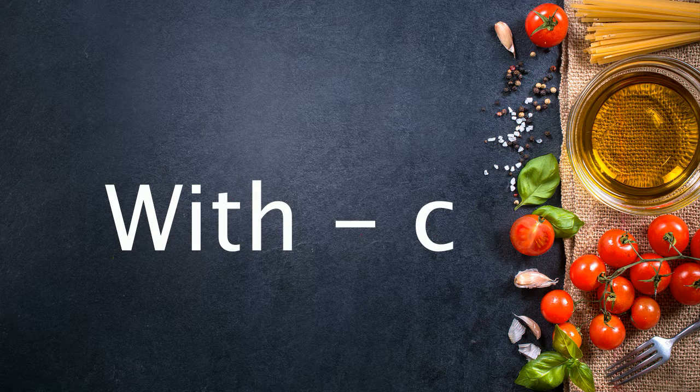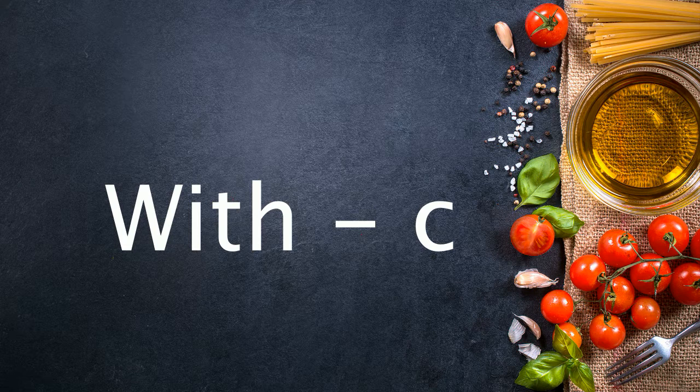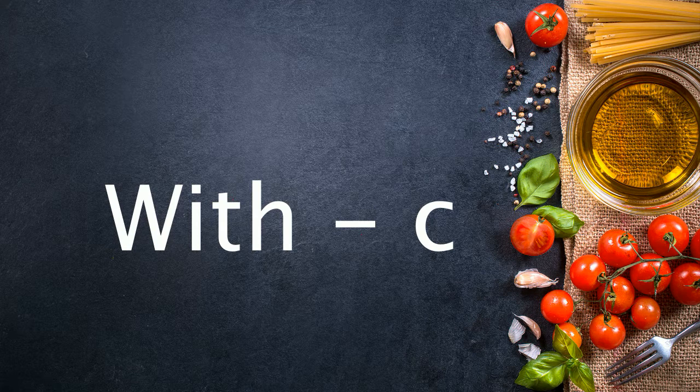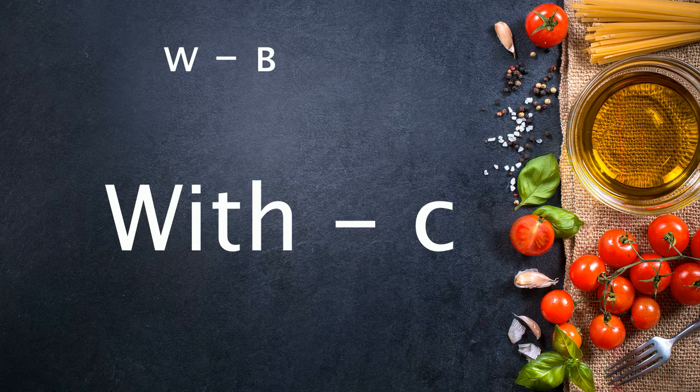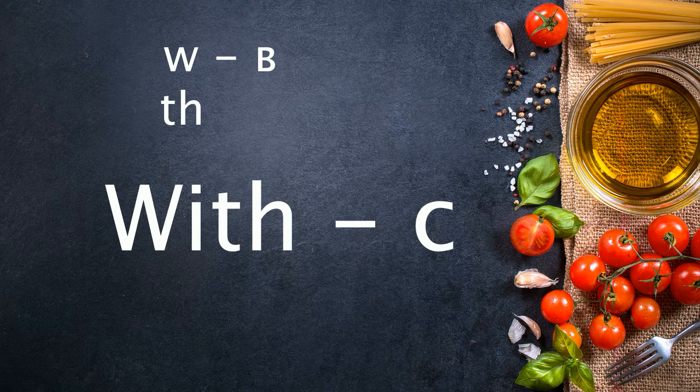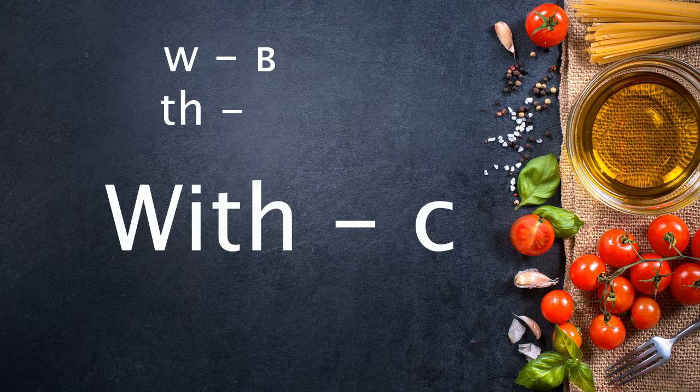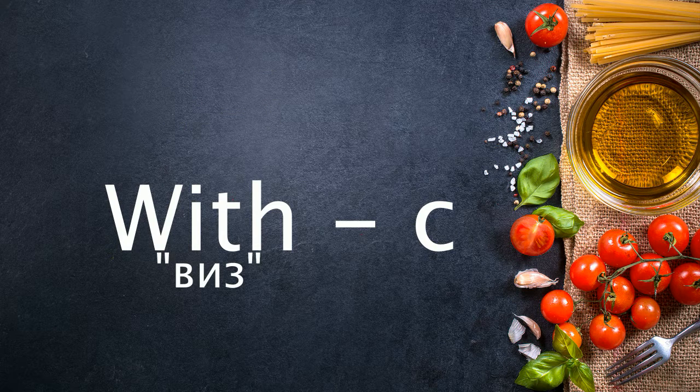The first word is the preposition 'with', which translates as 'with someone or something'. So how is 'with' pronounced? The letter W has a sound closer to Russian 'v', and 'th', as we already know, is closer to the sound 'z'. So the word 'with' with Russian transcription looks something like this.